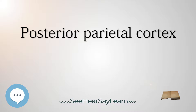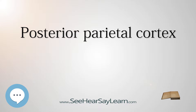The posterior parietal cortex receives input from the three sensory systems that play roles in the localization of the body and external objects in space: the visual system, the auditory system, and the somatosensory system. In turn, much of the output of the posterior parietal cortex goes to areas of frontal motor cortex, the dorsolateral prefrontal cortex, various areas of the secondary motor cortex, and the frontal eye field. The posterior parietal cortex is divided by the intraparietal sulcus to form the dorsal superior parietal lobule and the ventral inferior parietal lobule.